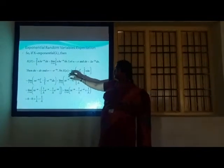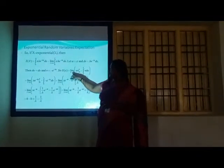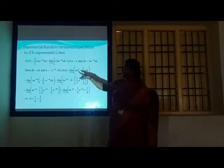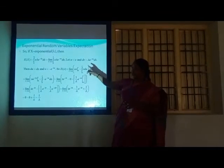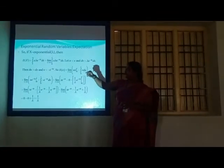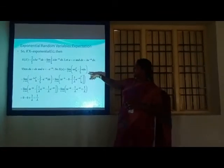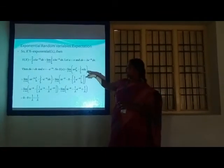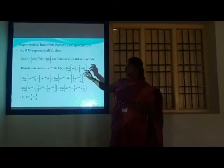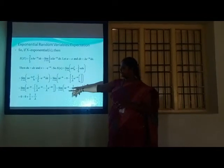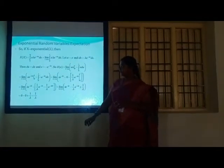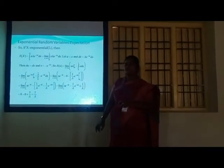Applying integration by parts, E[X] = [uv] from 0 to t minus the integral from 0 to t of v du. Working through the integration with respect to x, the answer is E[X] = 1/λ.